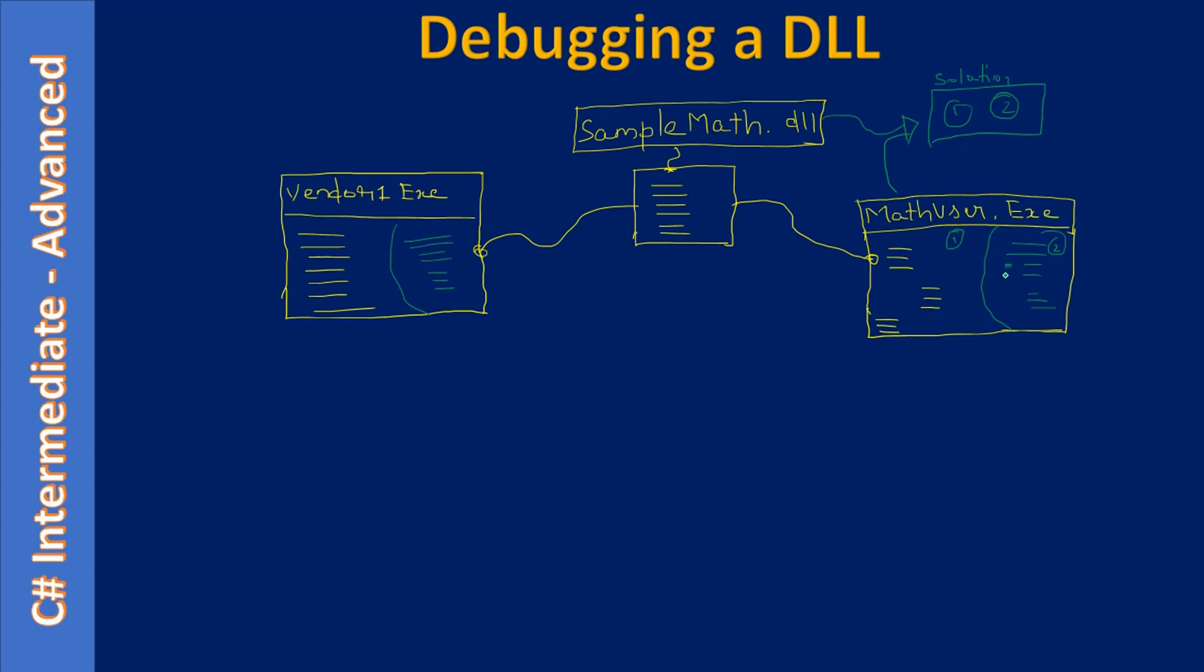But here, if you see, let's say the vendor code is not with us - we have only the EXE. There's some third party vendor, let us call it V1.exe, and they are using the DLL developed by us and they face some issue. They won't give you the source code. In that case, how do you debug and check? That's what we are going to see.